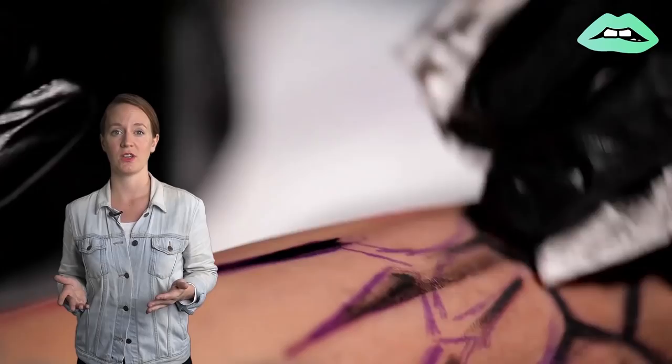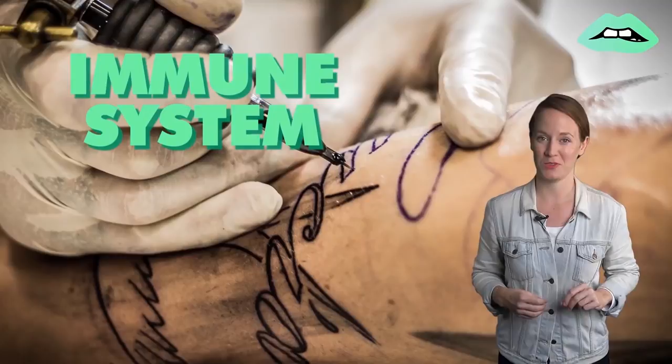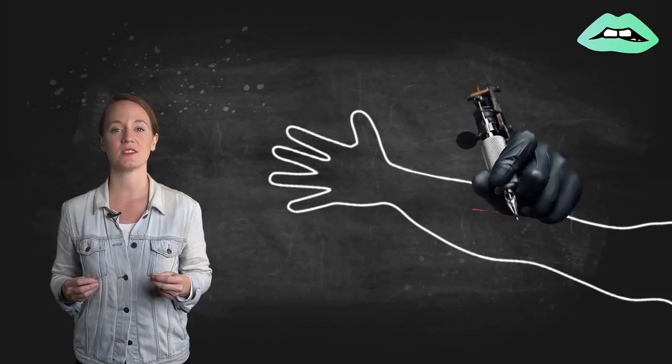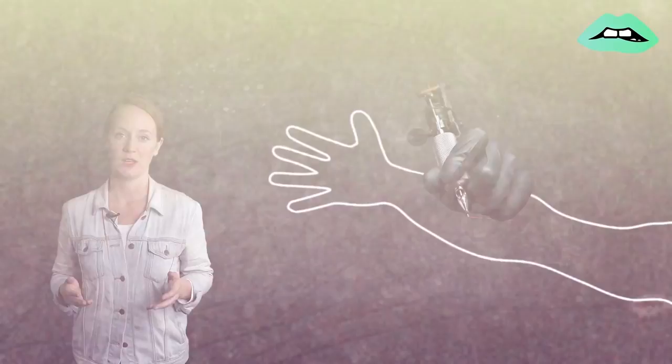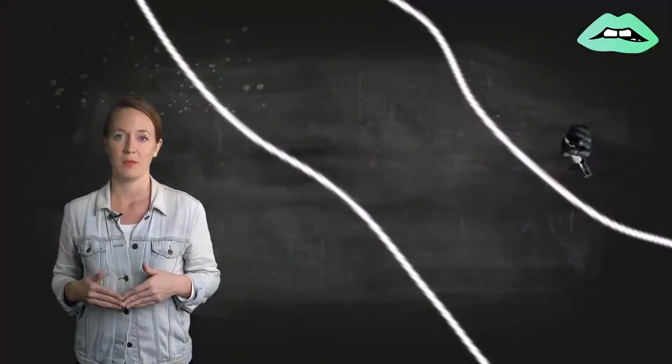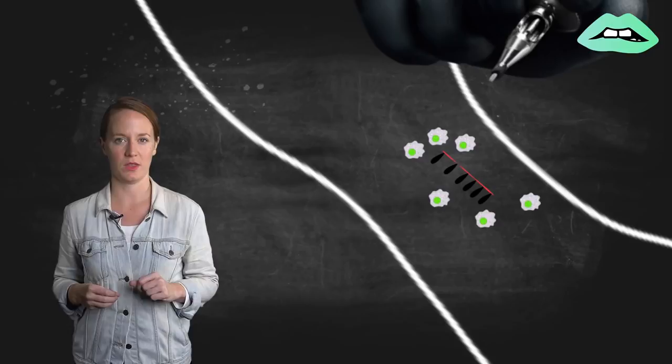And when it comes to the permanence of tattoos, you can thank or blame your immune system. You see, each time a tattoo needle pierces the skin, it causes a wound, which naturally causes a response from your immune system to send cells called macrophages to that area to close up those wounds. But when they get there, macrophages realize it's not just a wound they need to deal with, but a foreign invader as well: the ink.